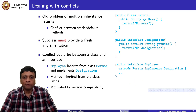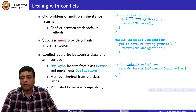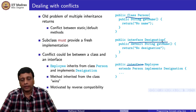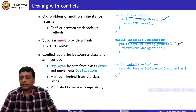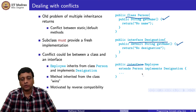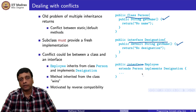A slightly different type of conflict arises when you extend a class and also implement an interface. If 'Person' is a class and 'Designation' is an interface, and both have a function with the same name, Java's rule is that the class definition wins. You are not obliged to override explicitly — if you do not overwrite the method inside 'Employee', you get the one from the superclass, not from the interface. In this case, the Person class function wins.